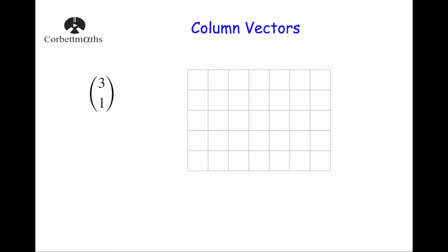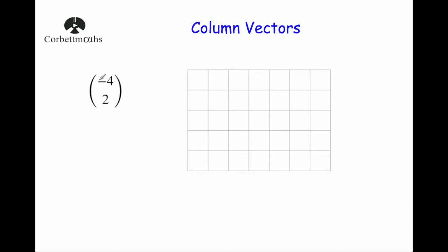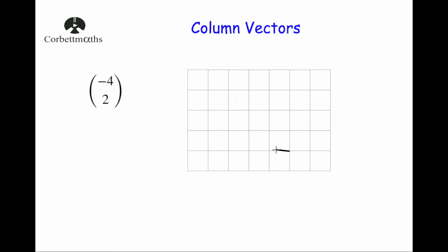Now we're going to represent these visually. The vector (3, 1) means three to the right and one up. I'll choose any starting position, go three to the right and one up, and draw an arrow to show we're going that way — three right and one up, not three left and one down. For the vector (-4, 2), that means four squares to the left and two squares up. I go four squares to the left and two squares up, and put my arrow on it to show the direction.